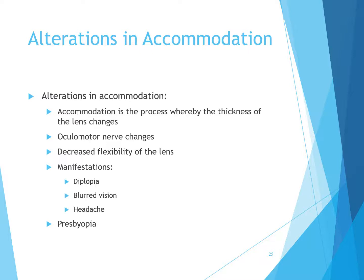Accommodation is the process where the thickness of the lens changes. Ocular motor nerve changes and decreased flexibility of the lens can manifest as diplopia (double vision), blurred vision, or headache. Presbyopia is a condition in which the ocular lens becomes larger, firmer, and less elastic, causing reduced near vision and leading individuals to hold reading materials at a distance. This typically begins around age 45 to 48.